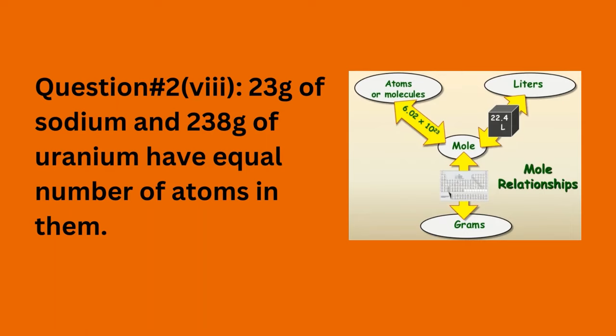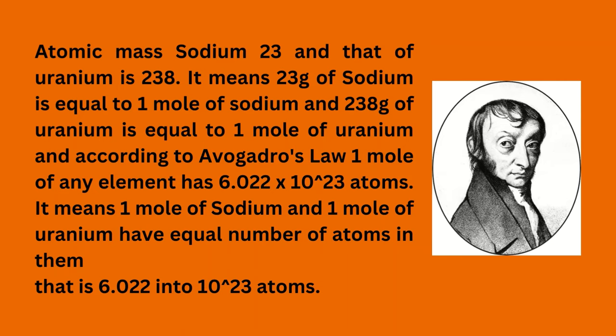Question number two, part eight: 23 grams of sodium and 238 grams of uranium have equal number of atoms in them. Atomic mass of sodium is 23 and that of uranium is 238. This means 23 grams of sodium equals one mole of sodium, and 238 grams of uranium equals one mole of uranium. According to Avogadro's law, one mole of any element has 6.022 × 10²³ atoms, so one mole of sodium and one mole of uranium have equal number of atoms: 6.022 × 10²³ atoms.